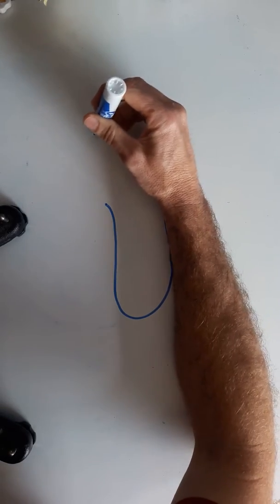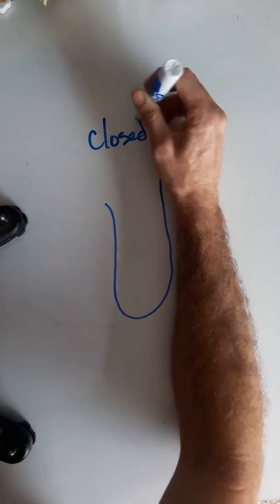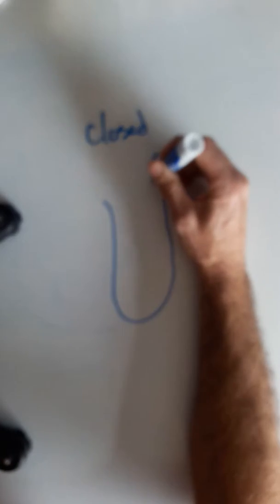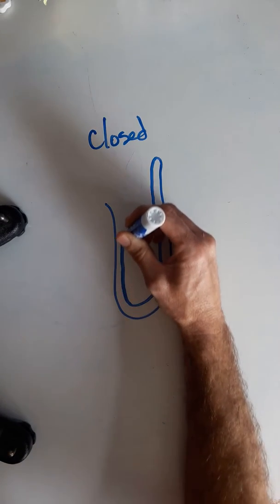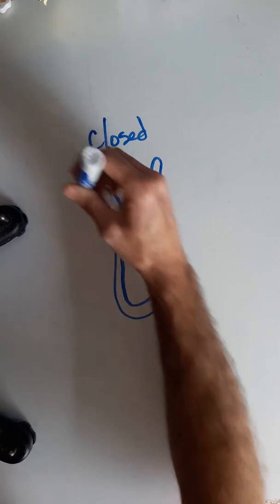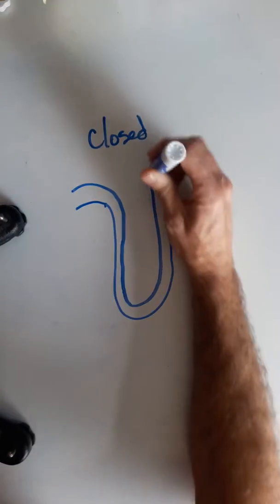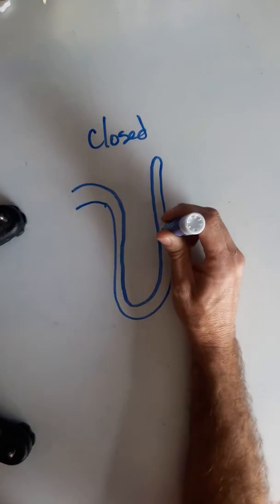This would be an example of a closed manometer, which this end is closed off to any air, any atmospheric pressure, anything. You have your mercury in your u-tube.